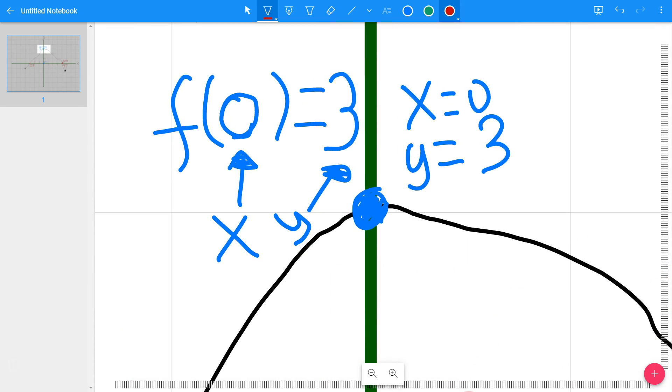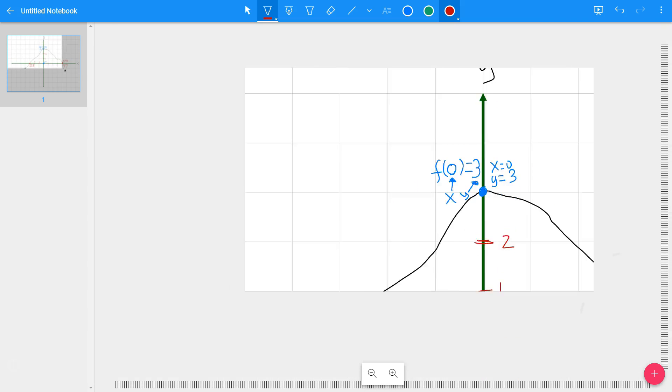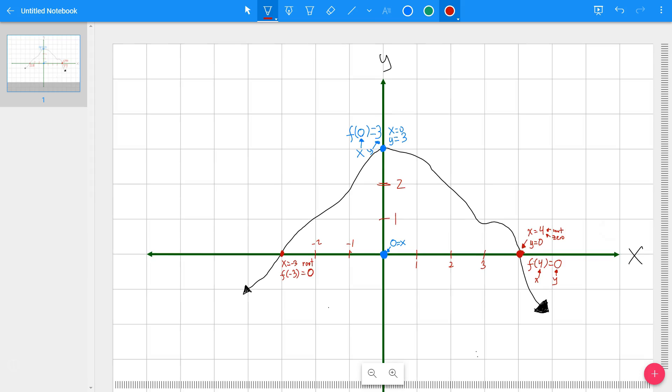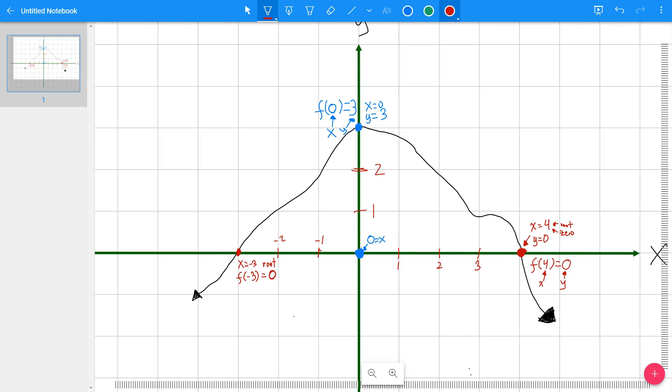And then over here, for the y-intercept, it's always x equals zero. And then the y is whatever it happens to be. Let me zoom out. That pretty much covers the most interesting cases. I'll see you in another video. Thanks so much for watching.